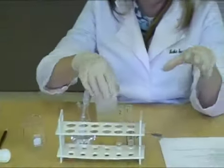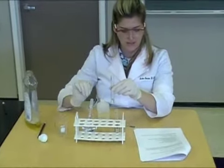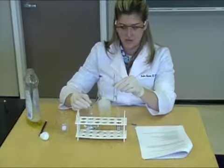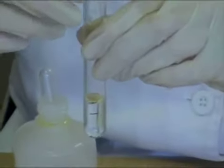In test tube 2, add distilled water to the 1 cm line. Then add your glucose solution to the 2 cm line. Swirl or tap and observe your results.